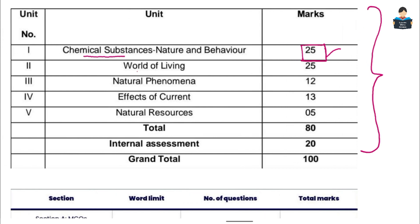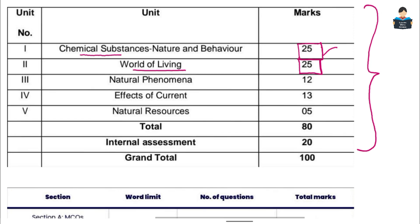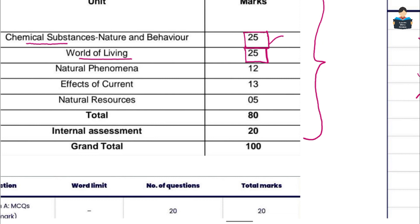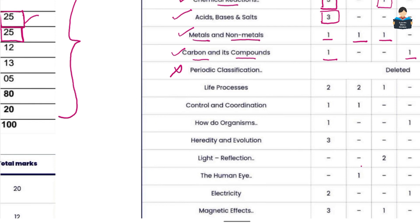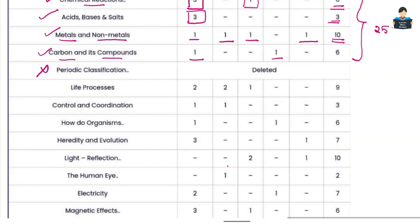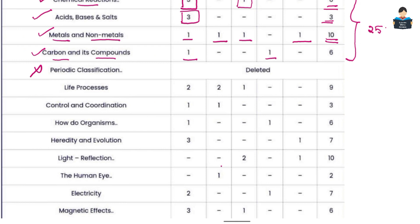The next unit is World of Living. In this unit, we have 25 marks. In the World of Living, we will see life processes, control and coordination, how do organisms reproduce, and heredity and evolution. So all together, we have 25 marks in this unit.